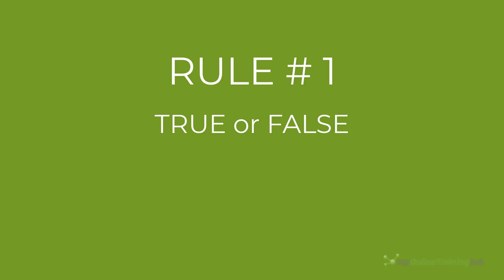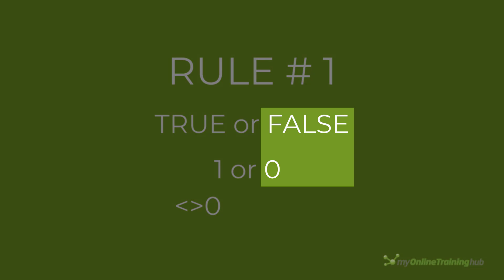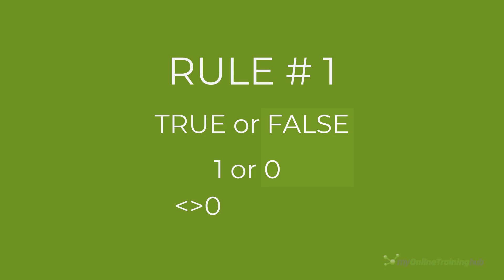Now the first rule is that the result of the formula must evaluate to true or false, or their numerical equivalents of 1 and 0. Or — and not many people know this — if the formula evaluates to any positive or negative number, it will also be treated as true and the format will be applied. It's only formulas that evaluate to 0 or false that won't have the formatting applied.